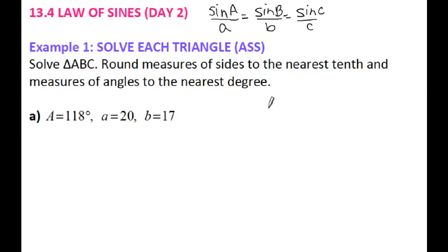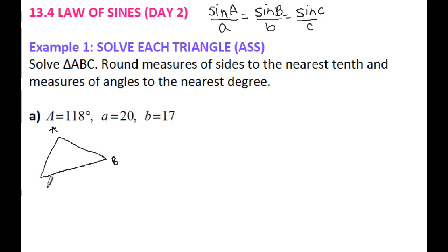For all of these problems, you're going to be given an angle and two of the sides. I'm going to sketch out the triangle. I have A, B, C. I know angle A is 118 degrees, I know side A is 20, and I know side B is 17.